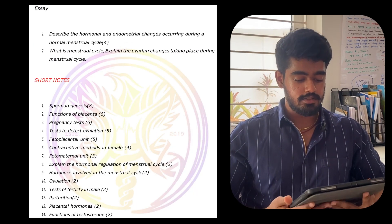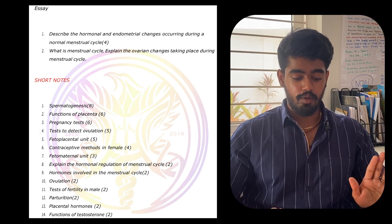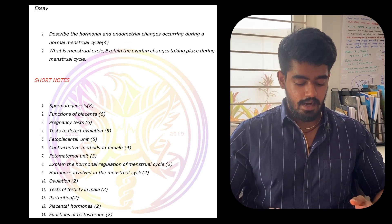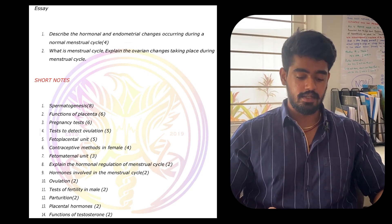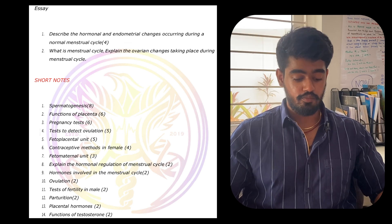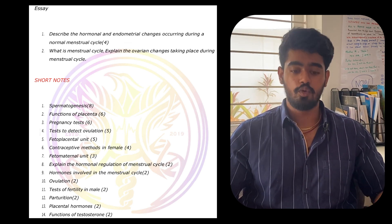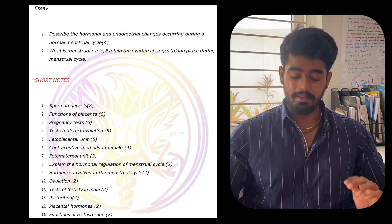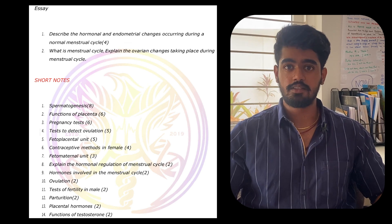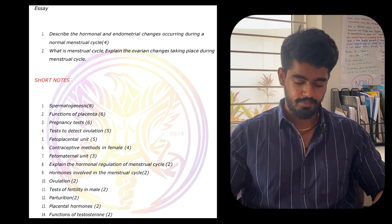Coming to the reproductive system — the menstrual cycle is critically important. Short notes include: spermatogenesis, functions of placenta, pregnancy test, detection of ovulation, fetoplacental unit, placental hormones, and functions of testosterone. These will be the most important short notes.